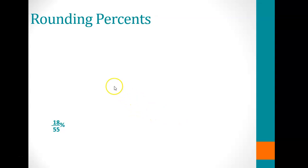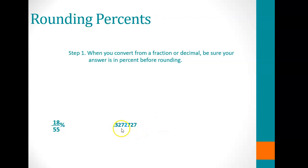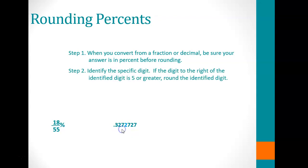Now, rounding percentages. With the M&M's, the first color had 18 over 55 as a fraction. If you divide 55 into 18 and carry it out as a decimal, it gives you 0.3272727.